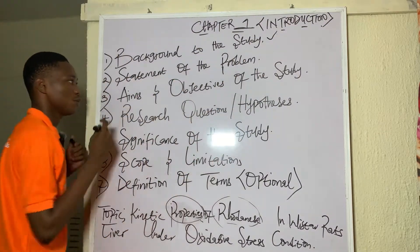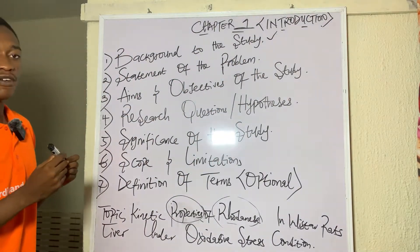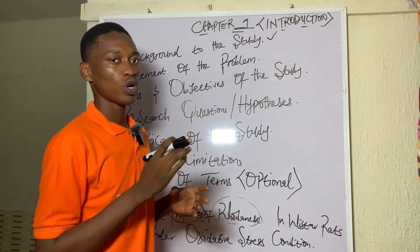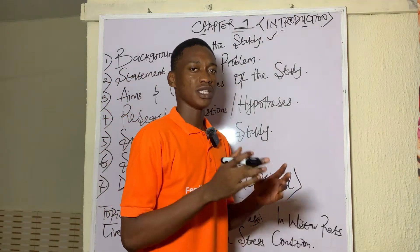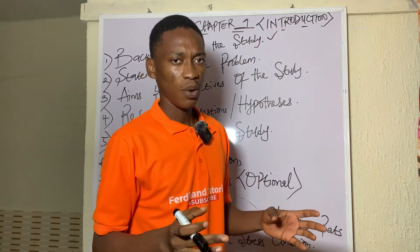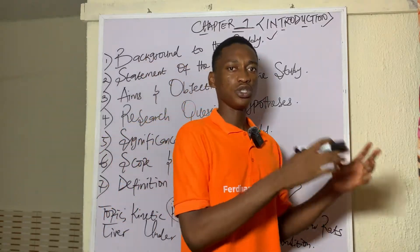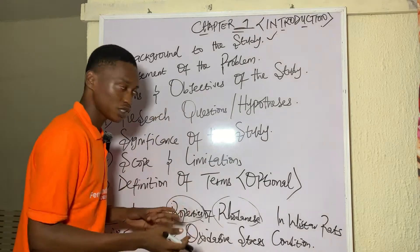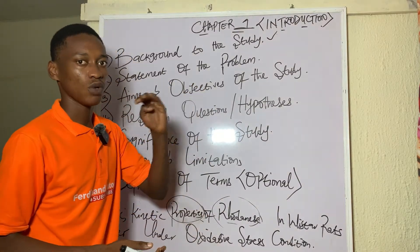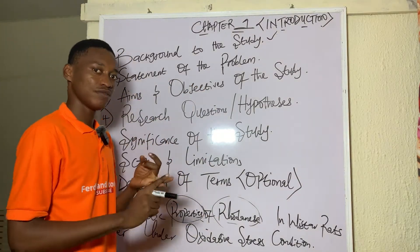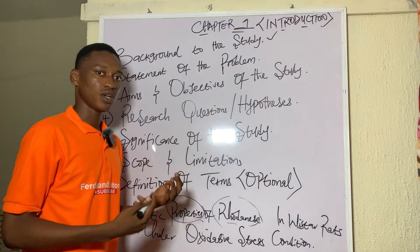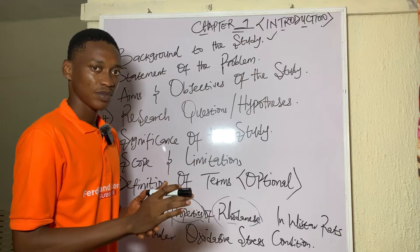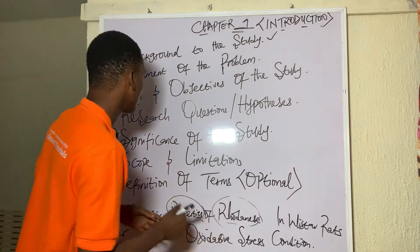Now for the second section: statement of the problem. Here you have to be direct and scientific. What is the practical problem? What is the knowledge gap? What has been tested, what has been proven? What are the issues associated with this research? This is where you state the problem — be direct and scientific. Don't sugarcoat everything; say it as it is.